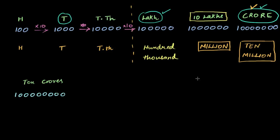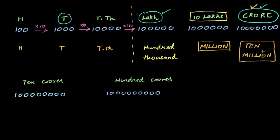And if I take that number again and multiply by another 10, then I get 1 followed by 9 zeros. You can see how easily it becomes difficult to count the zeros. So that's 100 crores. In India we call this 10 crores and 100 crores. What do we call this internationally? A crore was 10 million, so 10 crores is a hundred million.